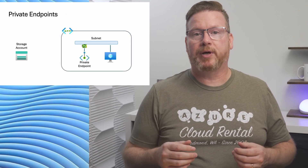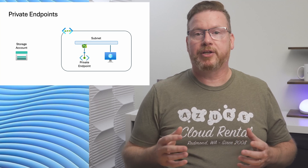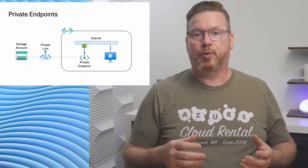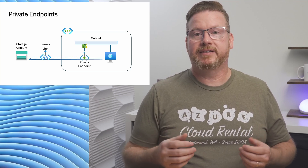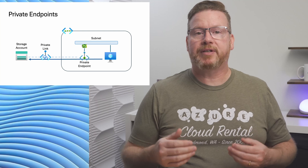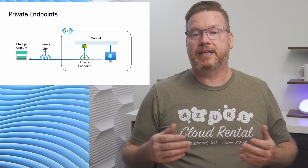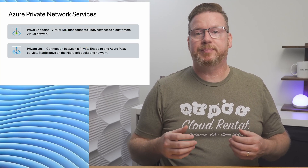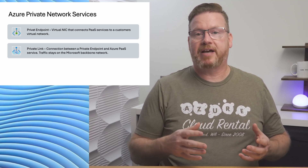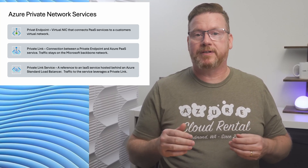Once connected, we can access that service by its private IP on our private network. Take a storage account for example — we can create a storage private endpoint attached to our virtual network and use that instead of the public endpoint to connect to the storage account. It becomes a private resource not available over the internet. Next is a private link — the connection between the private endpoint and the PaaS service. Private link traffic goes over the Microsoft backbone network, never over the internet.